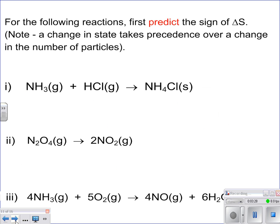Now, for these, it says for the following reactions, first predict the sign of delta S. So that's what we're going to start doing, is just predicting. We're not going to worry about any numbers at all. And it says, note, a change in state takes precedence over a change in the number of particles.